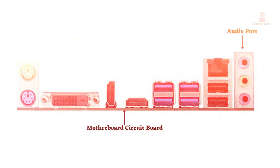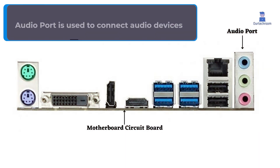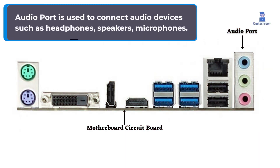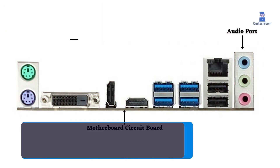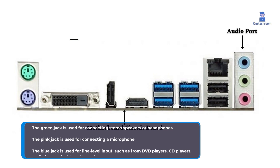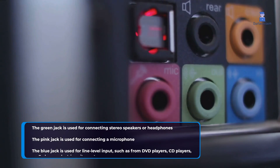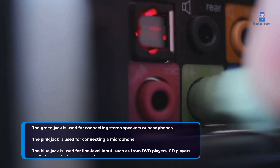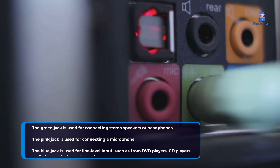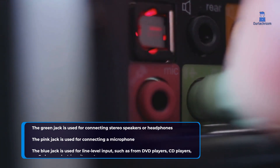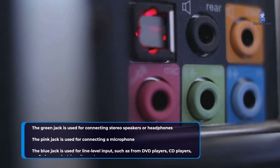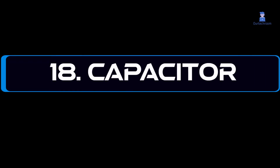17. Audio Port. The Audio Port is used to connect audio devices such as headphones, speakers, and microphones. The green jack is used for connecting stereo speakers or headphones. The pink jack is used for line level input, such as from DVD players, CD players, MP3 players, electric guitars, etc.